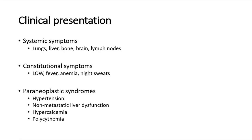Paraneoplastic syndromes may occur, including hypertension, non-metastatic liver dysfunction, hypercalcemia, and polycythemia — which is due to the production of erythropoietin by the tumor. Paraneoplastic syndromes occur in around 10 to 40% of cases of renal cell carcinoma.